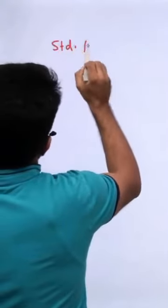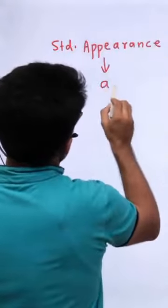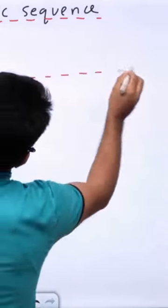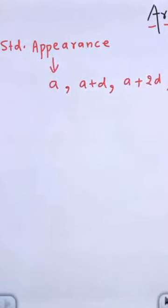How does the standard form of the arithmetic progression look? The first term is a, the second term is a plus d, then a plus 2d. This is the arithmetic sequence.